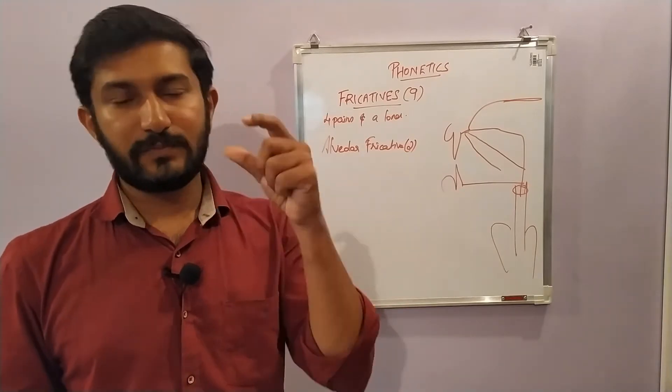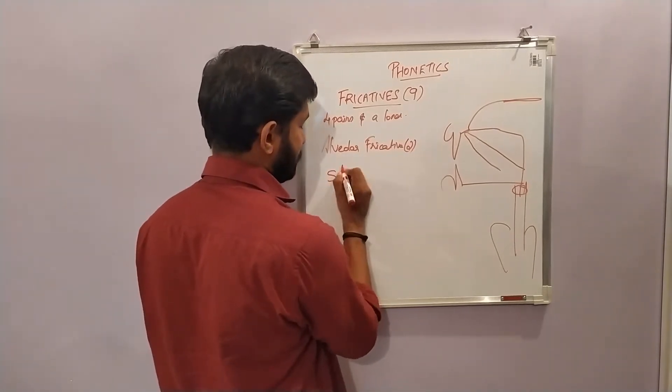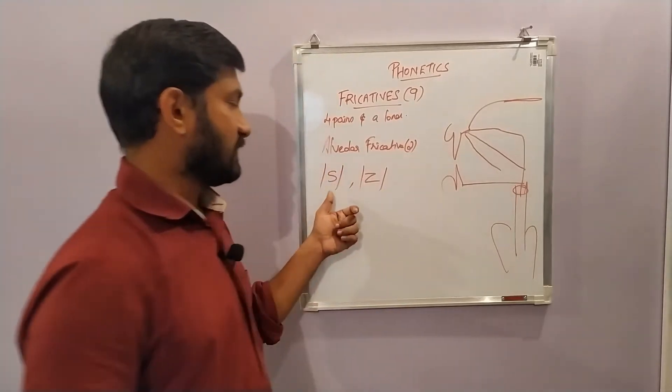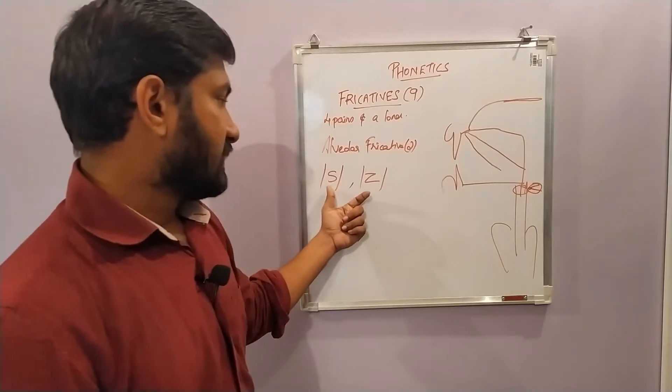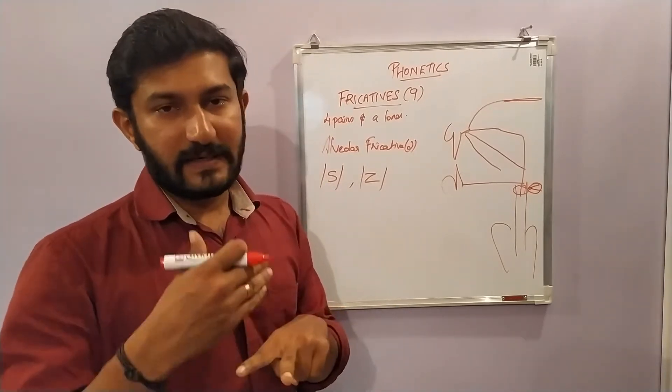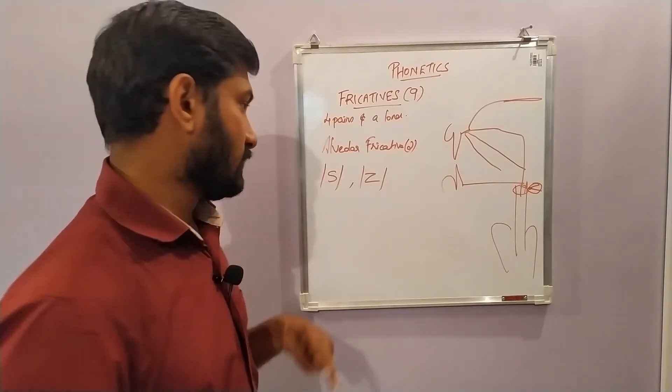The two alveolar fricatives are /s/ and /z/. In the case of /s/, the vocal cords are far apart, leaving a narrow gap. The air can escape through the gap without vibrating the vocal cords.